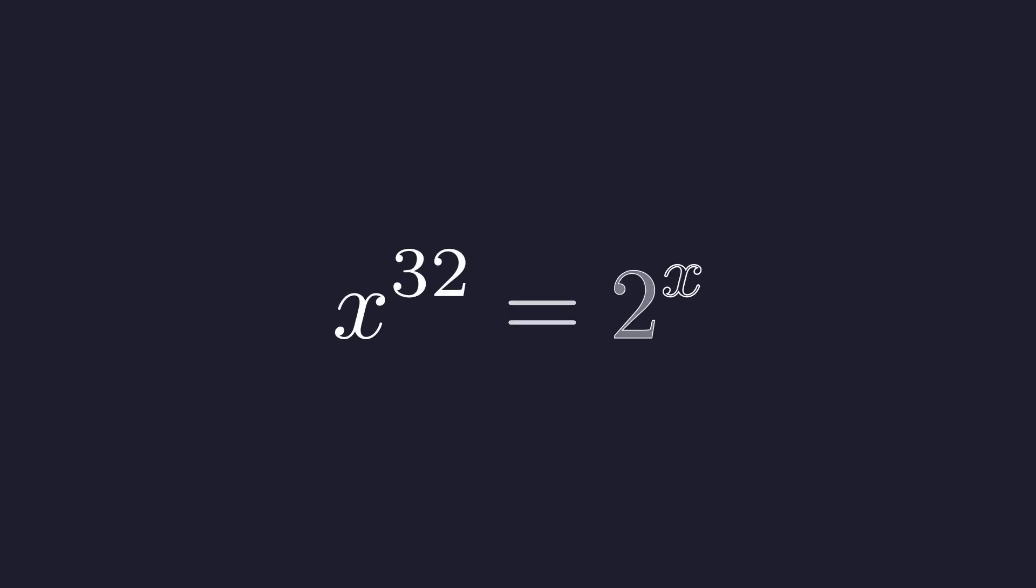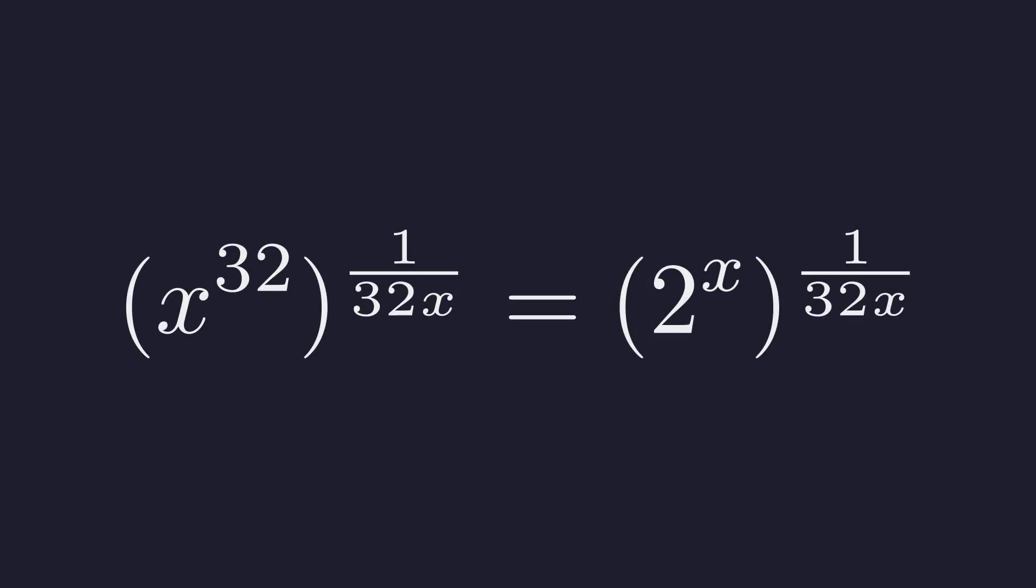Let's start with the original equation. The key idea is to transform both sides so x appears in a symmetric form. Watch what happens when we raise both sides to a carefully chosen power. We'll raise both sides to the power of 1 over 32x.